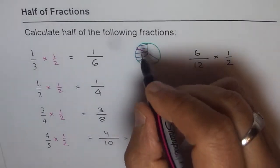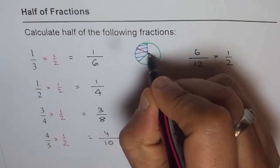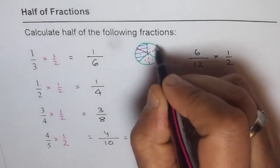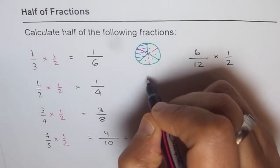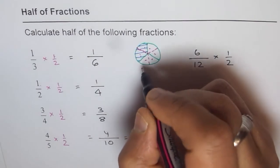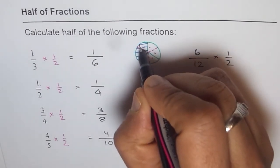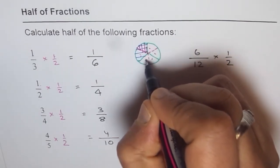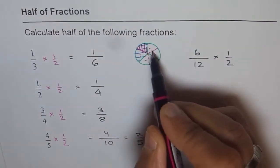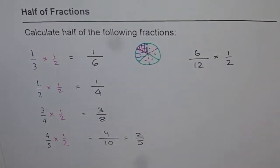We need to divide the other parts in half as well so that we can have equal parts. How many equal parts do we have now? We have 6 equal parts. And this is my half of 1 third — that is 1 out of 6. So that is how you get half of a fraction. It is much smaller — it's just half.